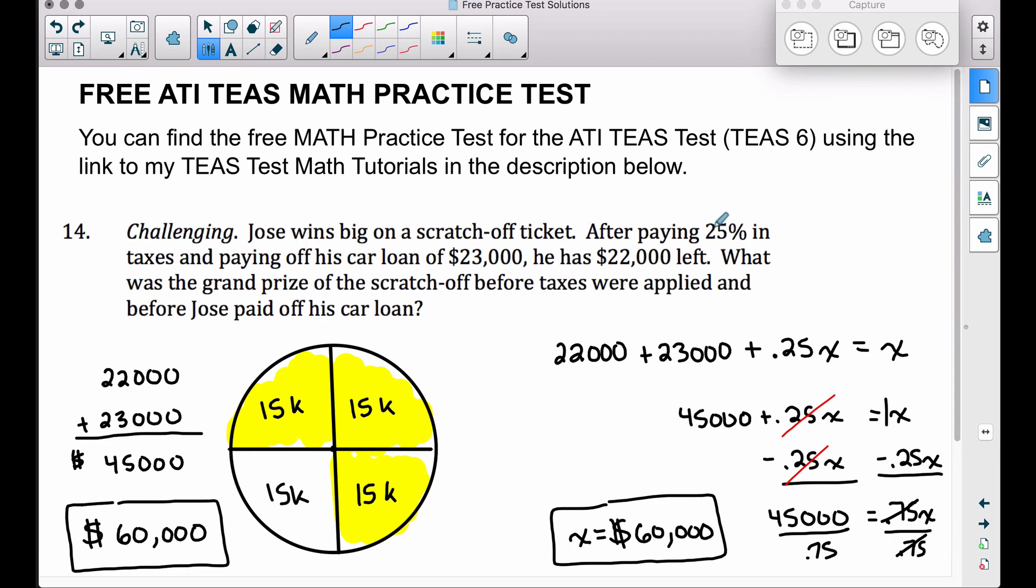We subtracted that off since he had to pay it. Then we subtracted off the $23,000 since he had to pay off his car loan. And once we subtracted those two values, he was left with $22,000. That's a good approach on the TEAS test, whereas these two techniques I'm showing you here would be helpful if you did not have a multiple choice question.